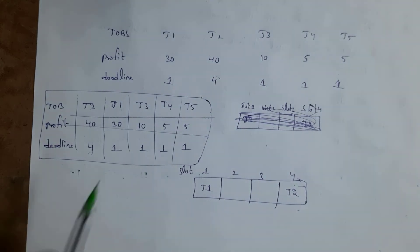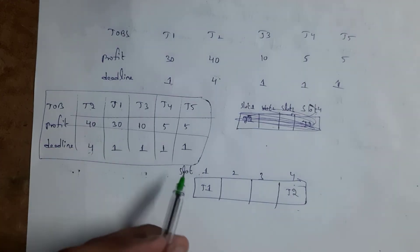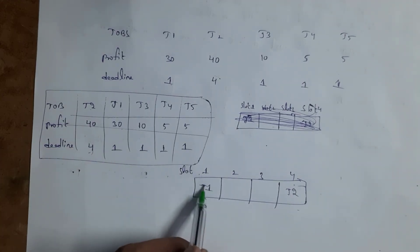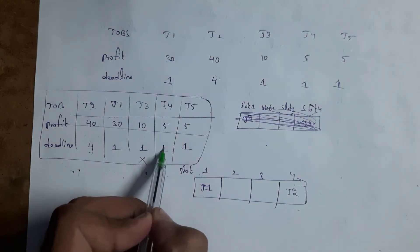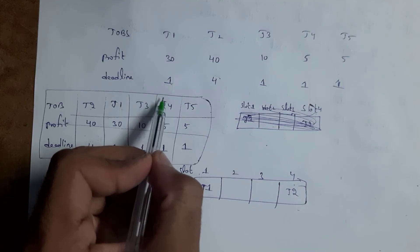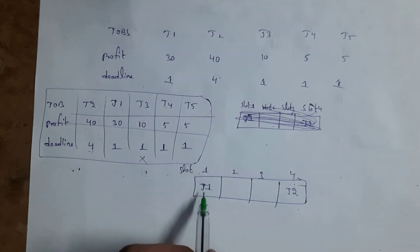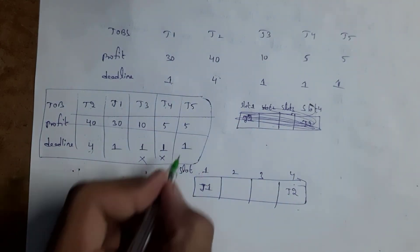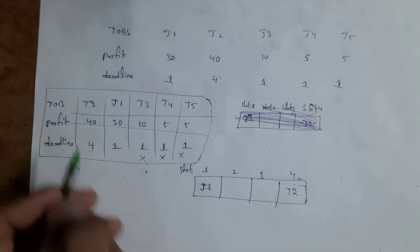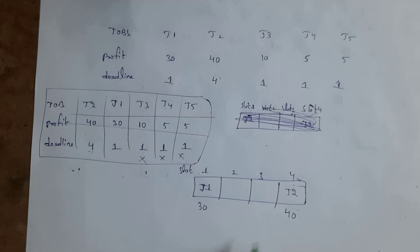For J3, the deadline is also 1 hour, but Slot 1 is already assigned to J1, so I cannot place J3. Similarly, J4 has a deadline of 1 hour, and since Slot 1 is taken, J4 cannot be scheduled. J5 also cannot be placed. Therefore, the selected jobs are J2 with profit 40 and J1 with profit 30, giving a total profit of 70.